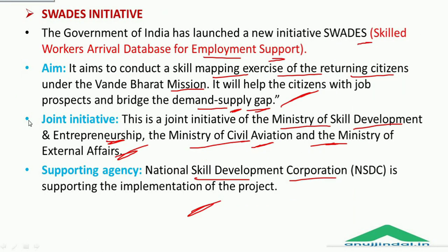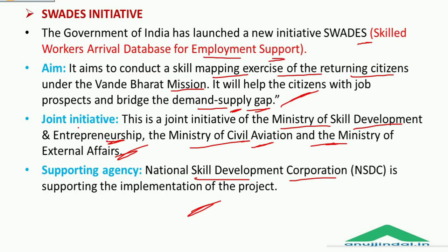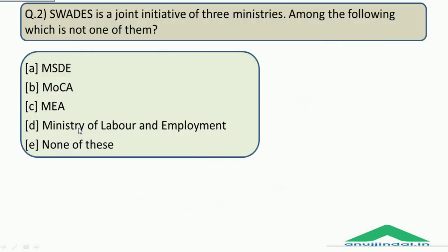The question was: what do the 2 S's represent in the word Swadesh? The 2 S's represent Skilled and Support. Therefore the correct answer is Option D — 2 and 4 — skilled and support. Remember the full form: Skilled Workers Arrival Database for Employment Support.